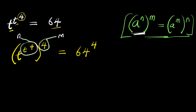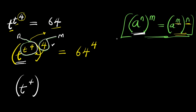Since we are treating t to the power of 4 as a single unit, we apply the identity so that the 4 comes inside the bracket and t to the power of 4 goes outside. So we have t raised to the power of 4, and this is raised to the power of t to the power of 4. This equals 64 raised to the power of 4.